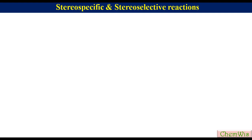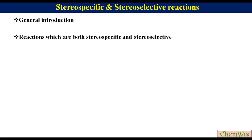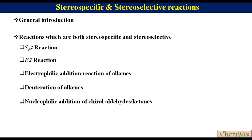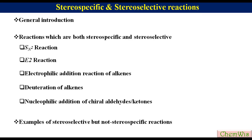Today we are going to discuss a very important topic of stereochemistry: stereospecific and stereoselective reactions. We will cover the following points: general introduction; reactions which are both stereospecific and stereoselective, including the stereospecificity and stereoselectivity of SN2 reaction, E2 reaction, electrophilic addition reaction of alkenes, deuteration of alkenes, and nucleophilic addition of chiral aldehydes or ketones; and lastly, some examples of stereoselective but non-stereospecific reactions.